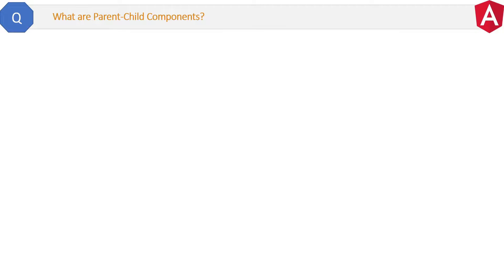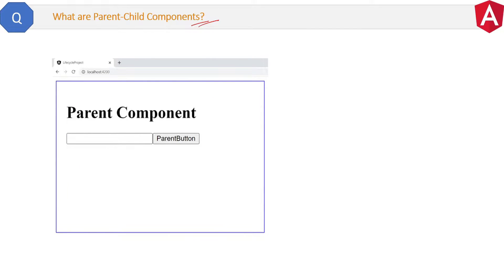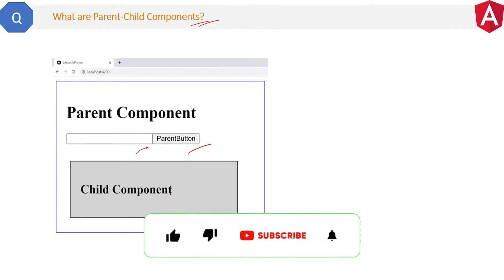Before understanding @Input, @Output decorators and Angular lifecycle hooks, we must know what are parent-child components. Suppose we have a parent component in our single page application with an input and a button field. Most of the time your app component or root component is the only parent component. And if there are any other components inside this component, then they will be called child components.